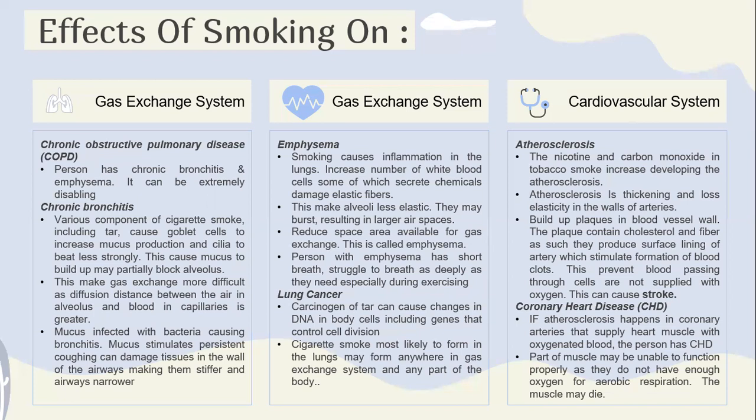We also have cardiovascular disease referred to as CHD, or coronary heart disease. If atherosclerosis occurs in the coronary arteries that supply heart muscle with oxygenated blood, the person may experience CHD. Part of the heart muscle may be unable to function properly as it does not receive enough oxygen for aerobic respiration. And ultimately, the muscle may die.